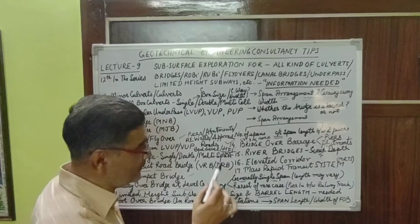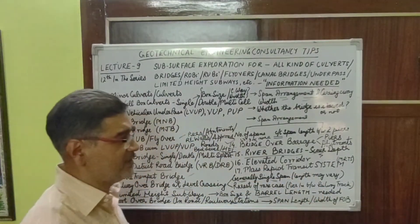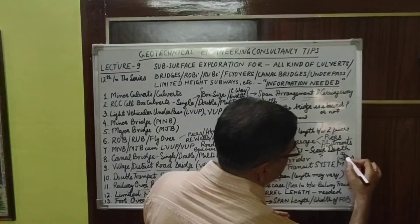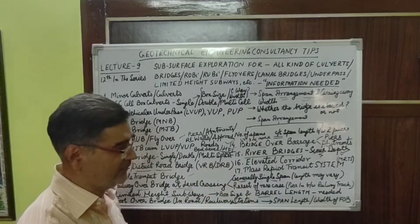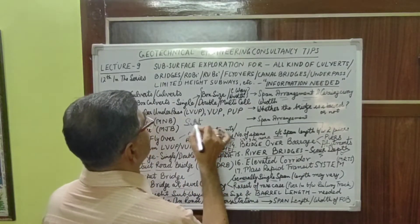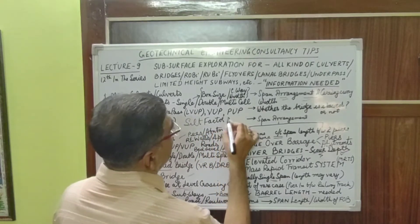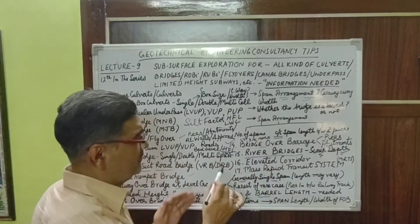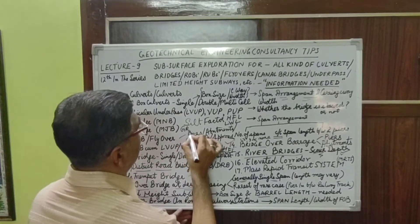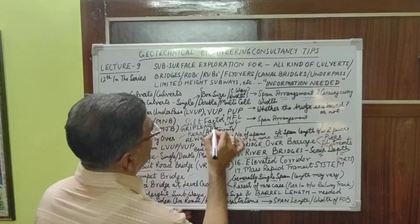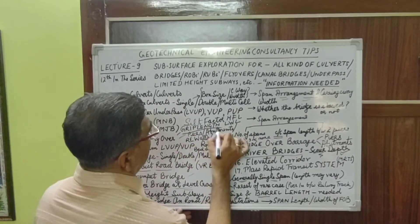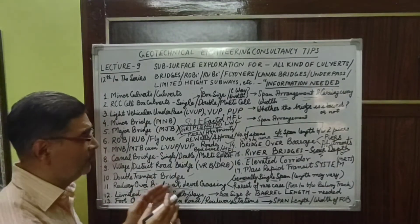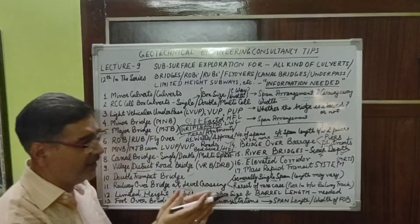For major river bridges, the most important factor is calculating the scour depth based on particle size analysis. First, the silt factor is calculated, then in conjunction with HFL and NWL, the scour depth is determined. Using that scour depth we decide on the grip length — the length that needs to be provided below the scour depth — for a stable foundation to be provided to that particular river bridge at pier locations.